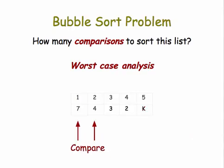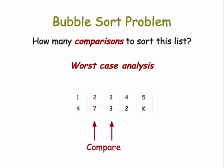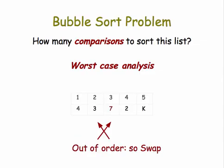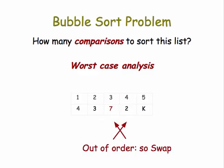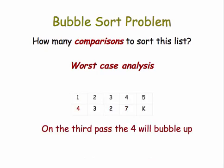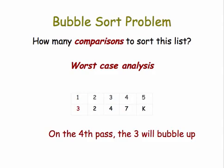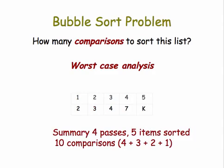Second pass: compare the seven and the four, out of order, swap them. Compare the seven and the three, out of order, swap them. Seven and two, out of order, swap them. After the second pass, two items have been sorted and it took us seven comparisons, three on this pass. Third pass, the four will bubble up, so that's two more comparisons. Fourth pass, the three will bubble up.